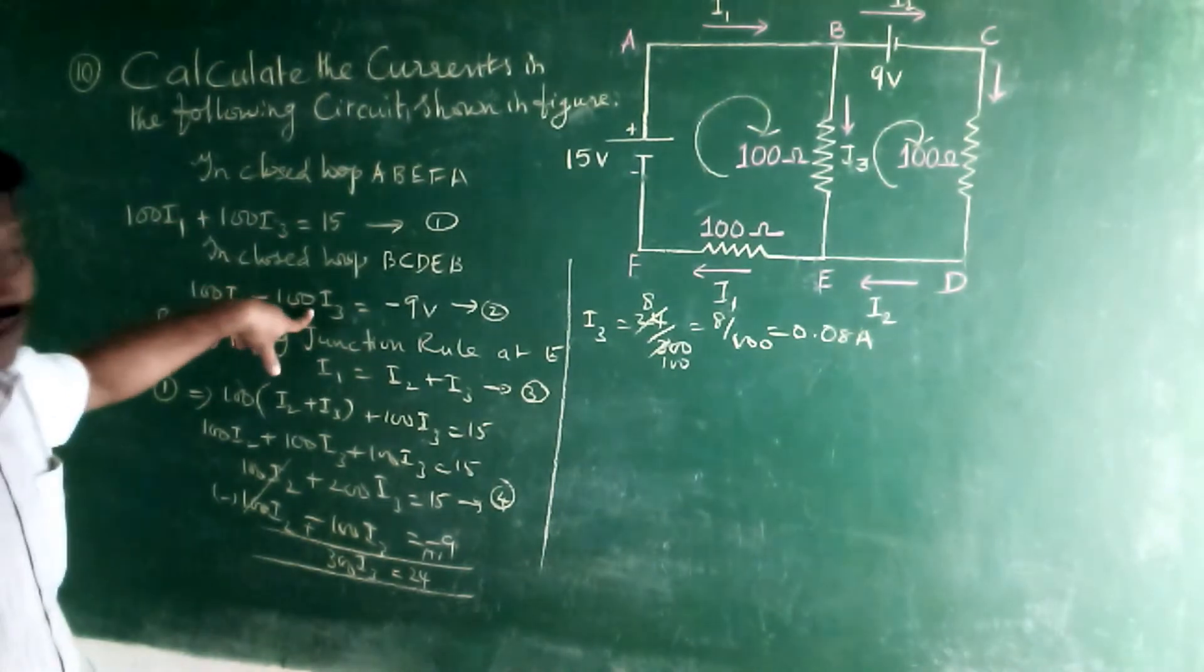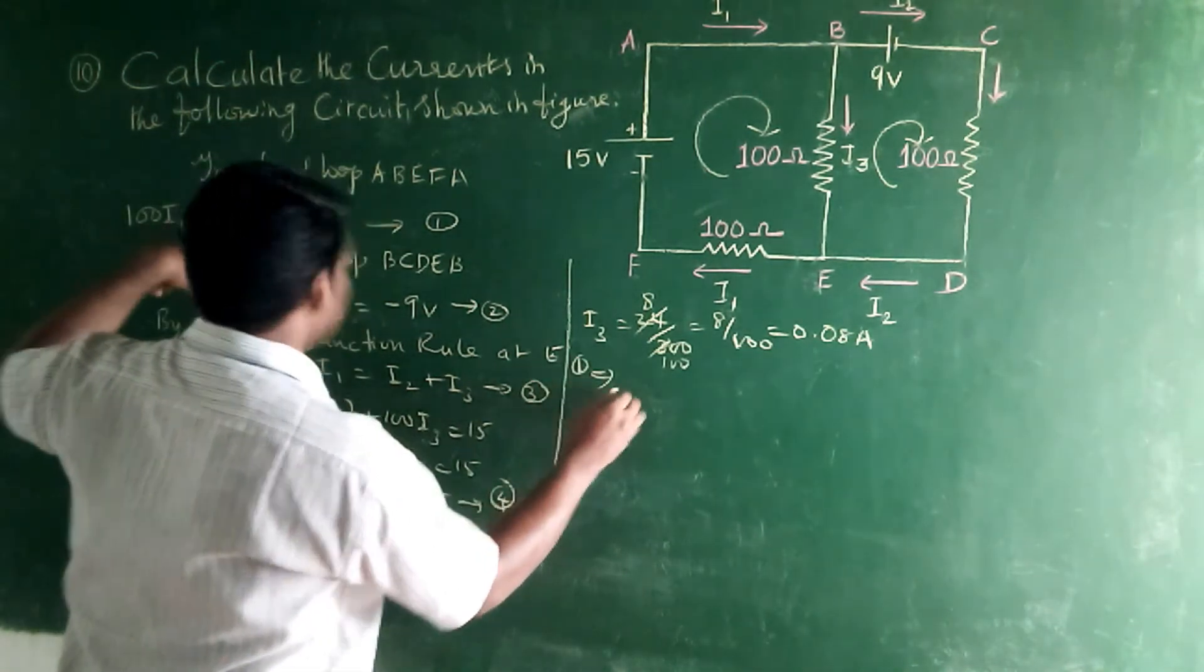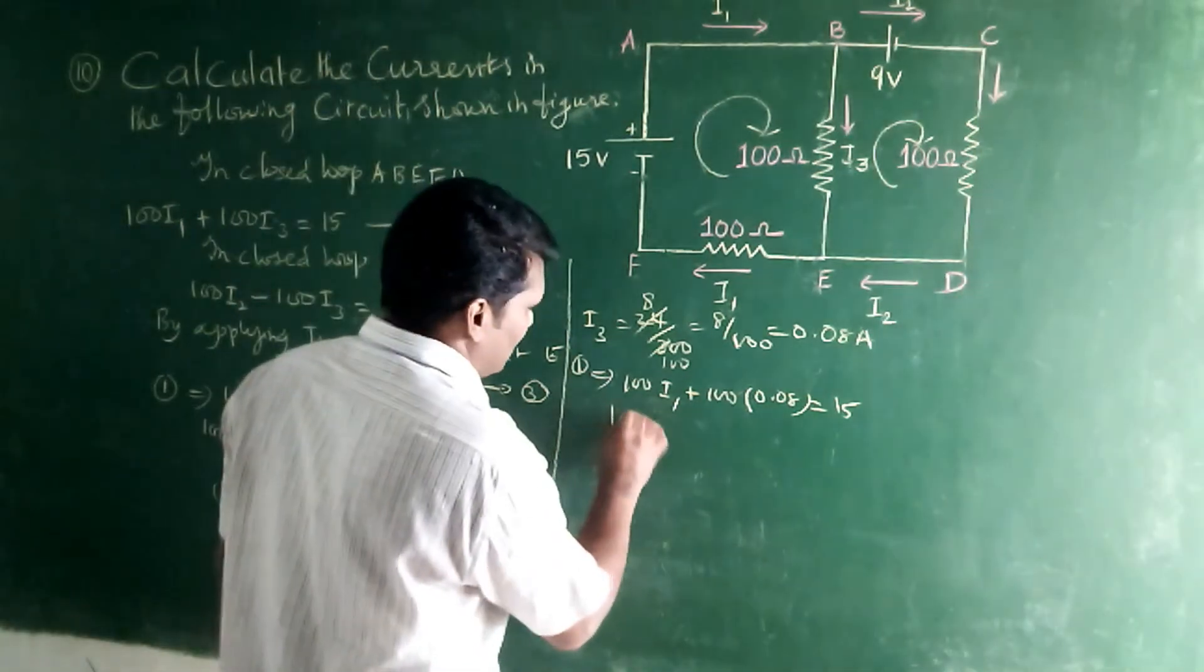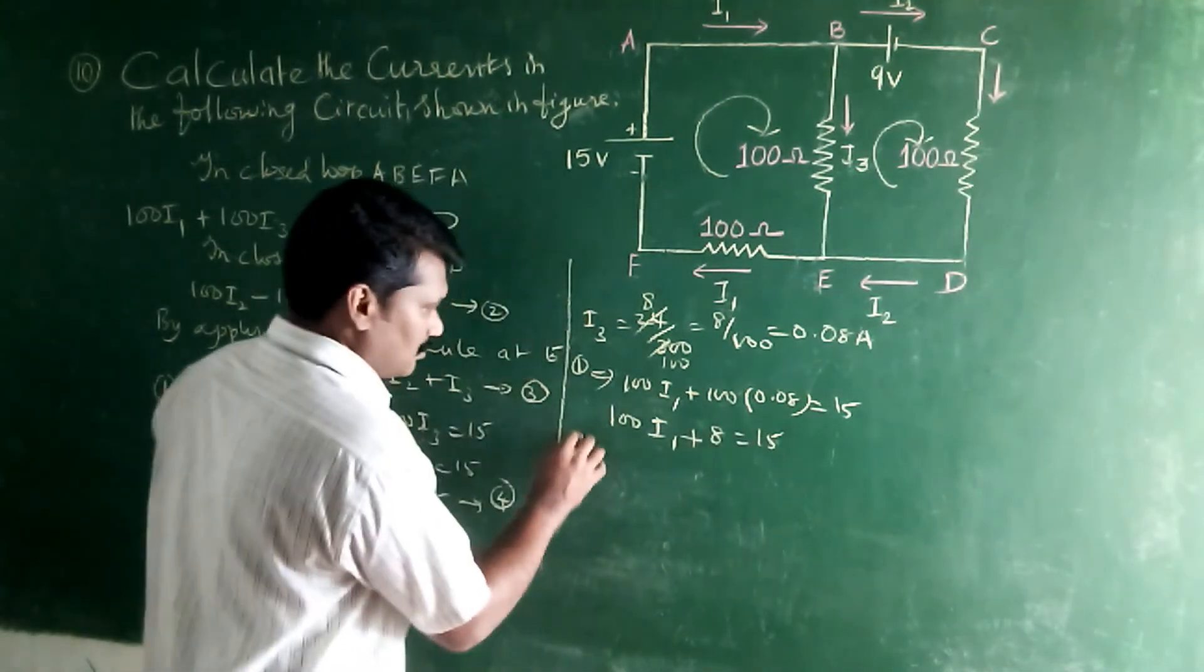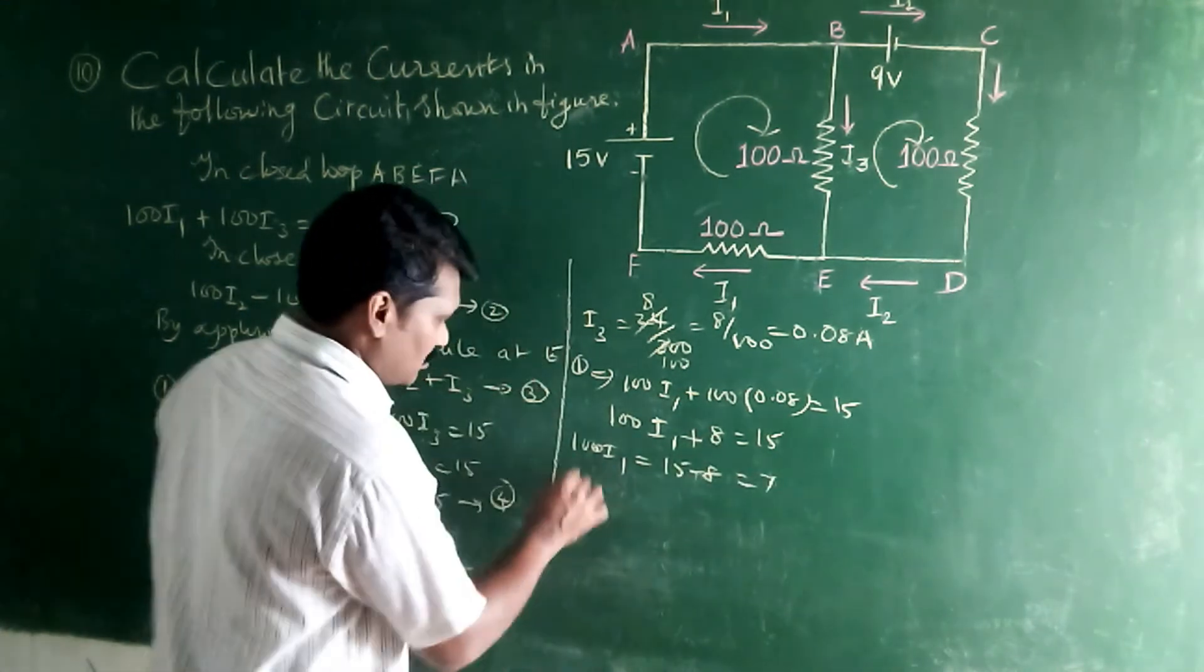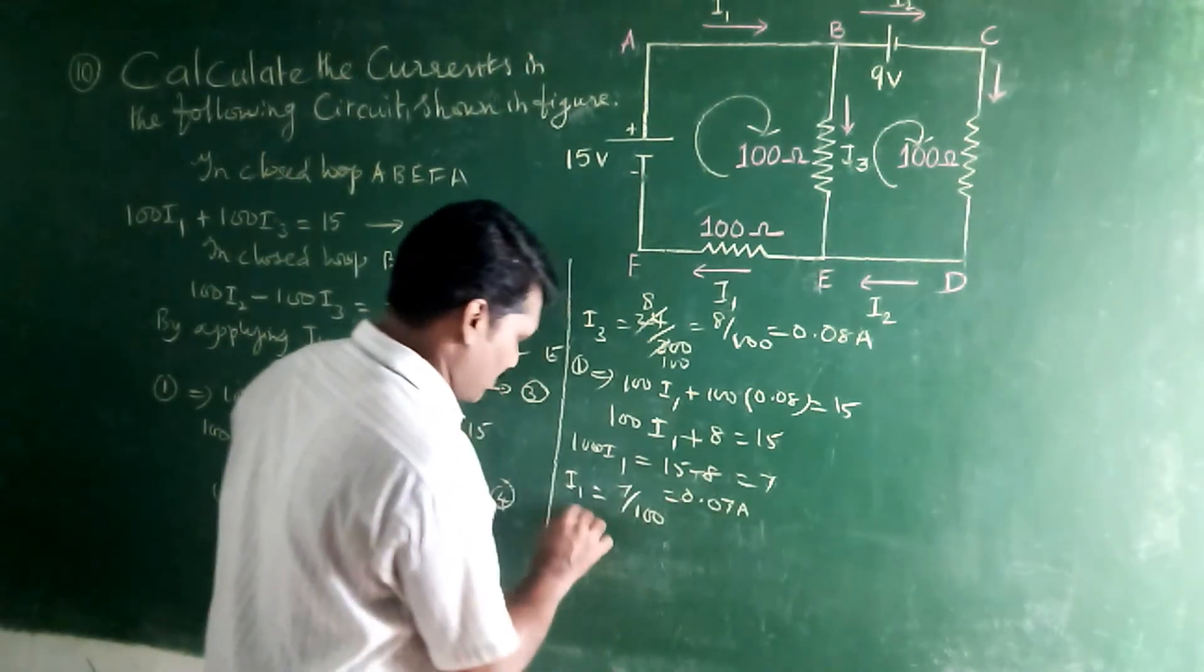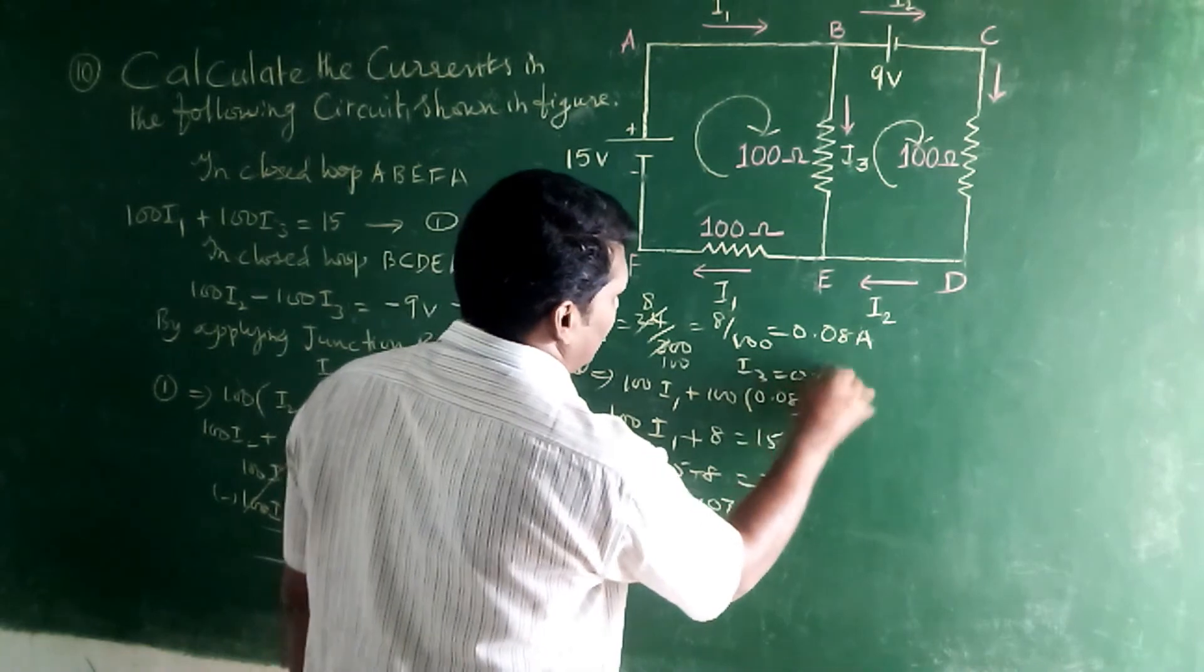Substitute I3 equal to 0.08 in equation 1. So equation 1 implies 100 I1 plus 100 times 0.08 equal to 15. So 100 I1 equal to 15 minus 8, which is 7. Then I1 equal to 7 by 100. I1 equal to 0.07 ampere.